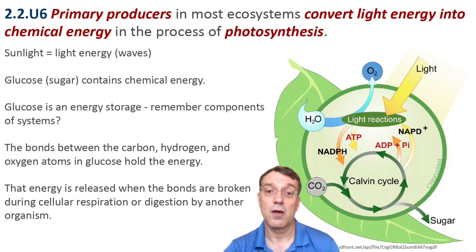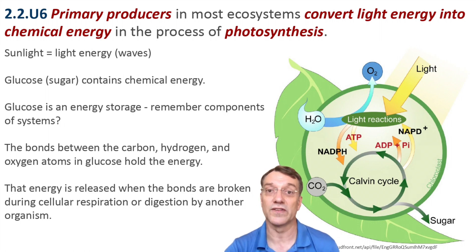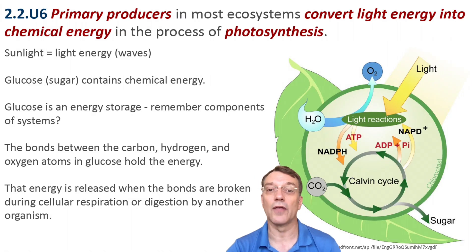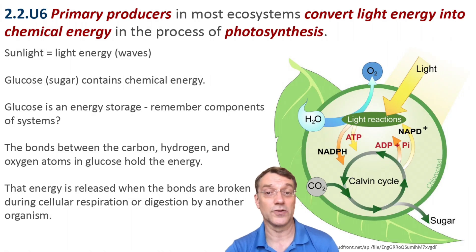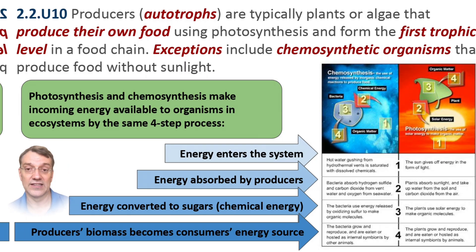Primary producers — mostly plants and algae — form the foundation of ecosystems by converting light energy into chemical energy through photosynthesis. This stored energy becomes available to other organisms in the ecosystem when they're eaten. Some exceptional organisms, like bacteria near deep sea vents, can produce food through chemosynthesis without using sunlight.